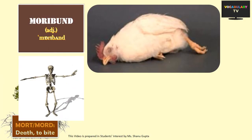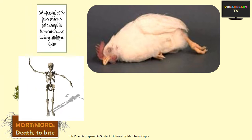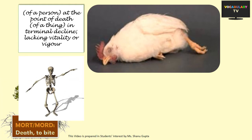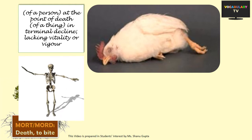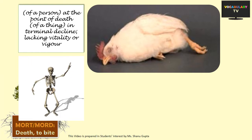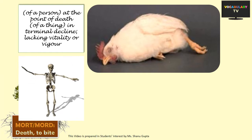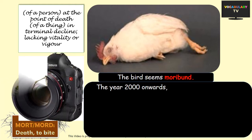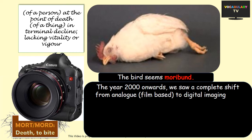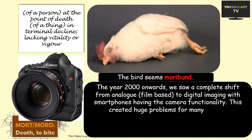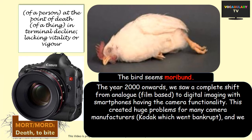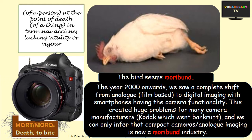The last of the words derived from 'mort' is 'moribund'. If someone or something is moribund, it is in a death-like state or just about to die. Moribund can describe a person or even an animal which is at the point of its death — like the bird here seems moribund. More commonly, moribund is used for things such as a dying industry which is in terminal decline and lacks vitality or vigour. The best example is the shift in the photography industry from the year 2000 onwards — from analog or film-based to digital imaging, with even smartphones having camera functionality. This created huge problems for many camera manufacturers, and Kodak went bankrupt; we can infer that compact cameras or analog imaging is now a moribund industry.